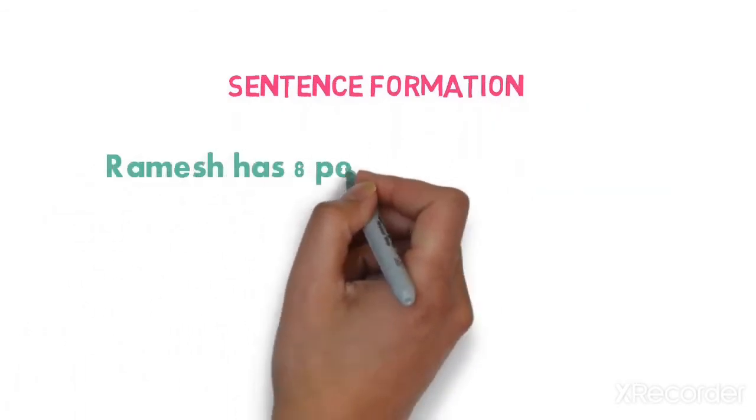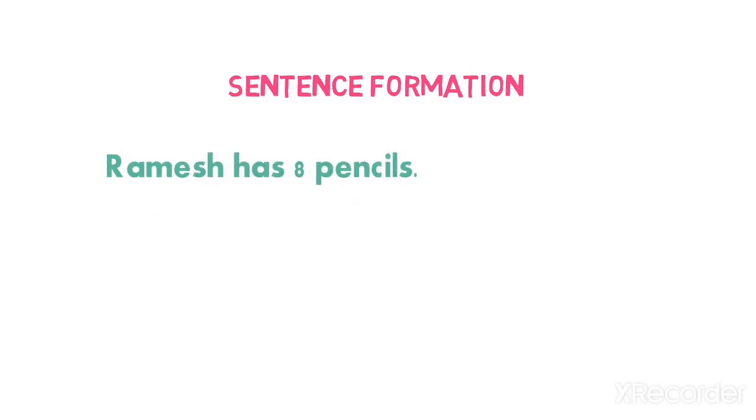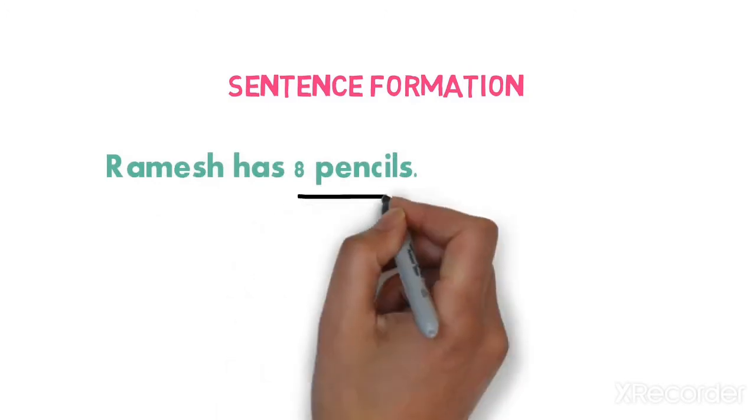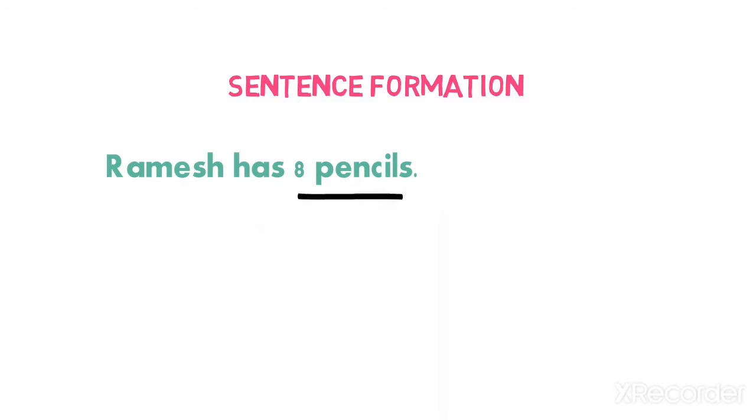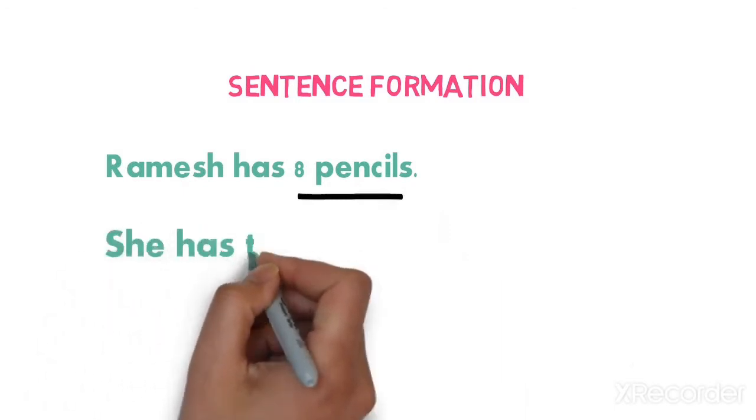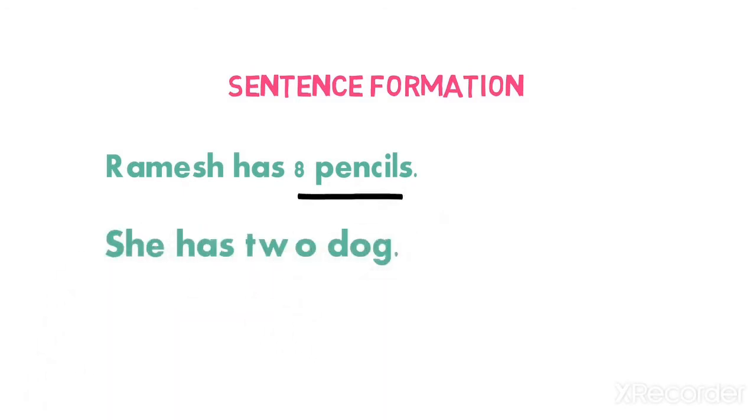First, Ramesh has eight pencils. How many pencils does Ramesh have? He has eight pencils. She has two dogs. How many dogs does she have? She has two dogs.